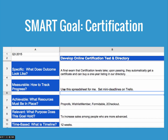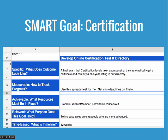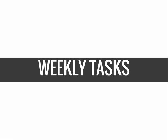For Achievable, I list all the resources that needed to be in place to create this goal. For Relevant, the purpose is to increase sales among more advanced students. And I have the time frame — 12 weeks. Then I take that 12-week goal — this one is for third quarter of 2015 — and break it down every week into weekly tasks.